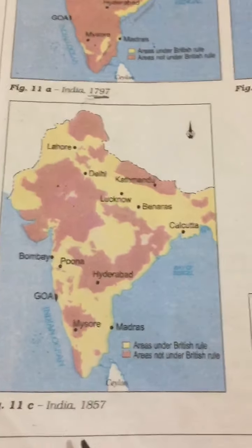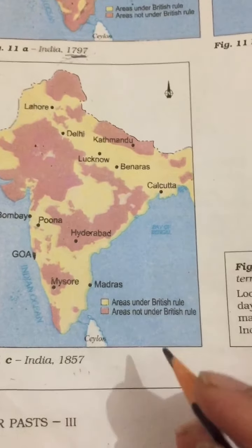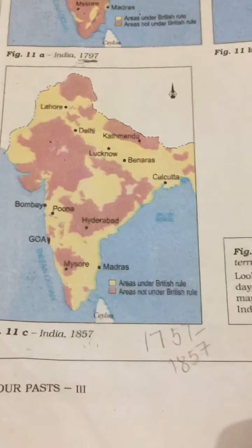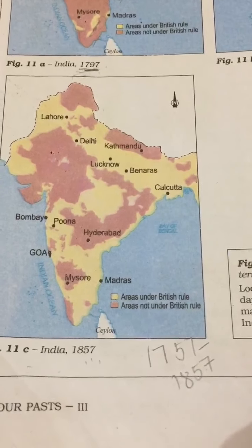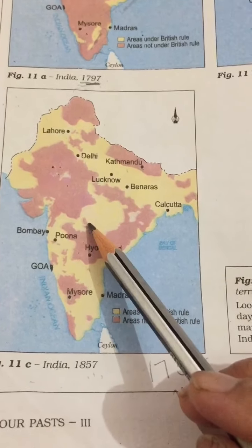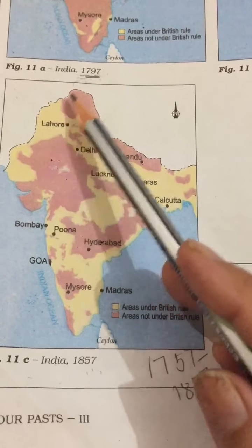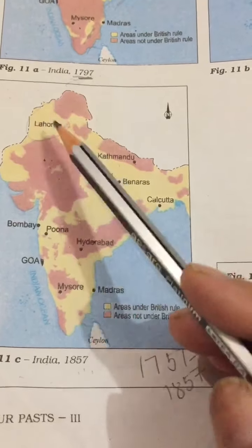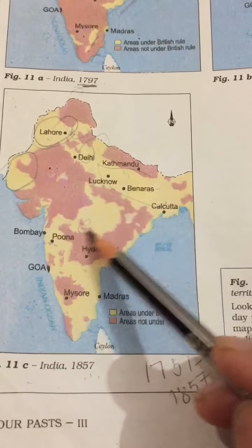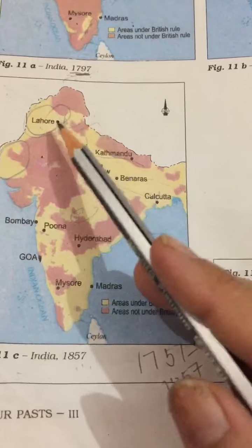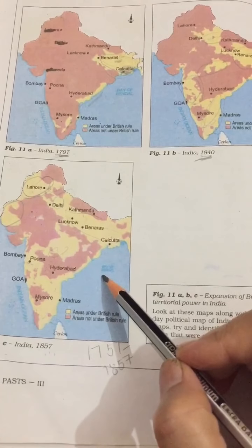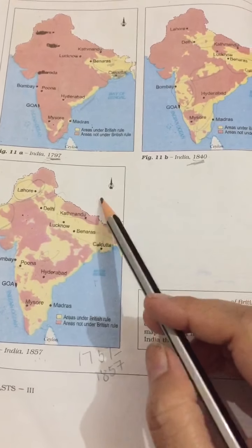Between 1757 and 1857 they expanded their power and controlled most of the territories of India. On the 1857 map, to stop the Russians they also controlled Punjab and this northwestern part, and Delhi, and most of the territory was annexed by the Britishers. With the help of these three maps you can observe how the East India Company expanded its powers.